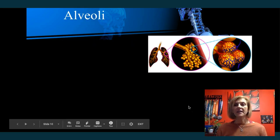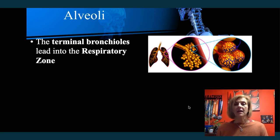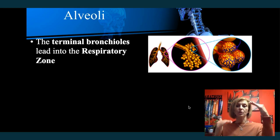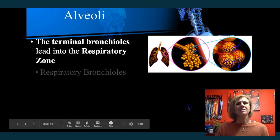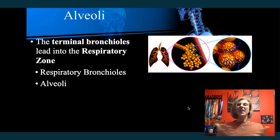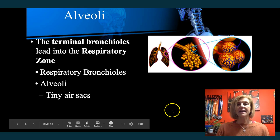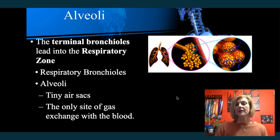The alveoli are at the very end of the bronchioles — at the terminal bronchioles — and this is where you enter the respiratory zone, where gas exchange takes place. The exchange of oxygen and CO2 is not happening in the nose, trachea, or bronchi — only in the alveoli. Something super interesting: if you took all the alveoli out and opened them up, they would cover a tennis court. They're tiny air sacs, looking like a bunch of grapes on branches, and they're a single cell layer thick, which makes them ideal for gas exchange.